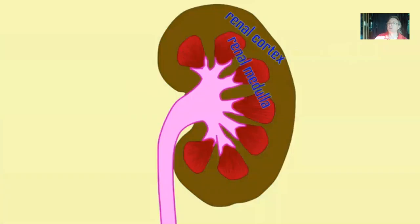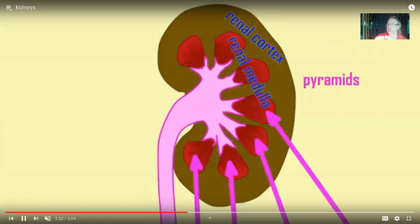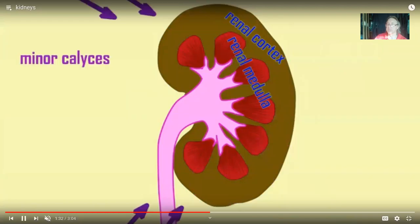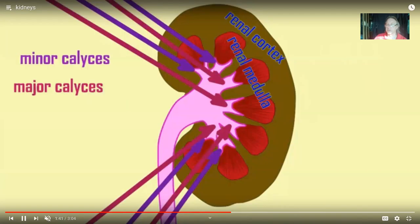The kidneys have an outer cortex and inner medulla, and the nephrons — which are making the urine — begin in the cortex and many then dip down into the medulla. Once urine is made in the cortex and medulla, it leaves through spaces called minor calyces, major calyces, and a central renal pelvis, before passing into the ureter and moving toward the bladder.